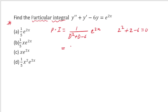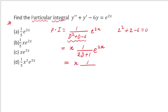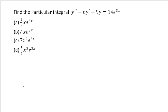In this failure case, multiply by x on the left of the operator and differentiate the operator with respect to D. You get x · 1/(2D+1) · e^(2x). Now substitute D = 2: 2·2+1 = 5, which is not zero, so we get (1/5)xe^(2x). The correct option is (1/5)xe^(2x).